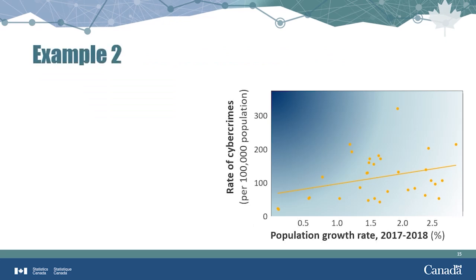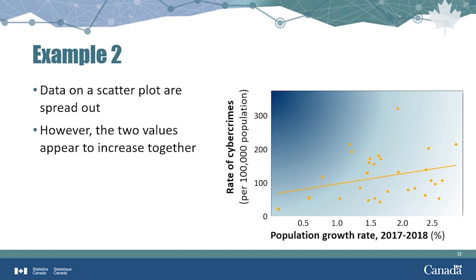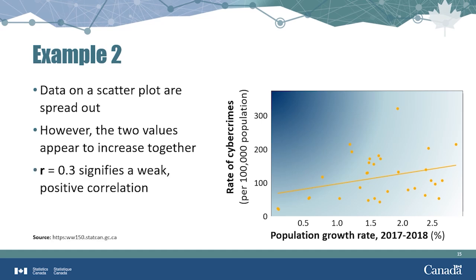In reality, the relationship between two values is unlikely to be as obvious as the link between time in a kettle and water temperature. Let's look at a real-life example that compares population growth with cybercrime in 2018. The scatterplot shows that as population growth rate values increase, so do the cybercrime rate values, implying a positive correlation. At the same time, the data points are well spread out, making it hard to draw a straight line close to all points. We calculate the correlation coefficient and see that r equals 0.3, signifying a weak positive correlation. Therefore, in 2018, there was a weak positive correlation between population growth and cybercrime.